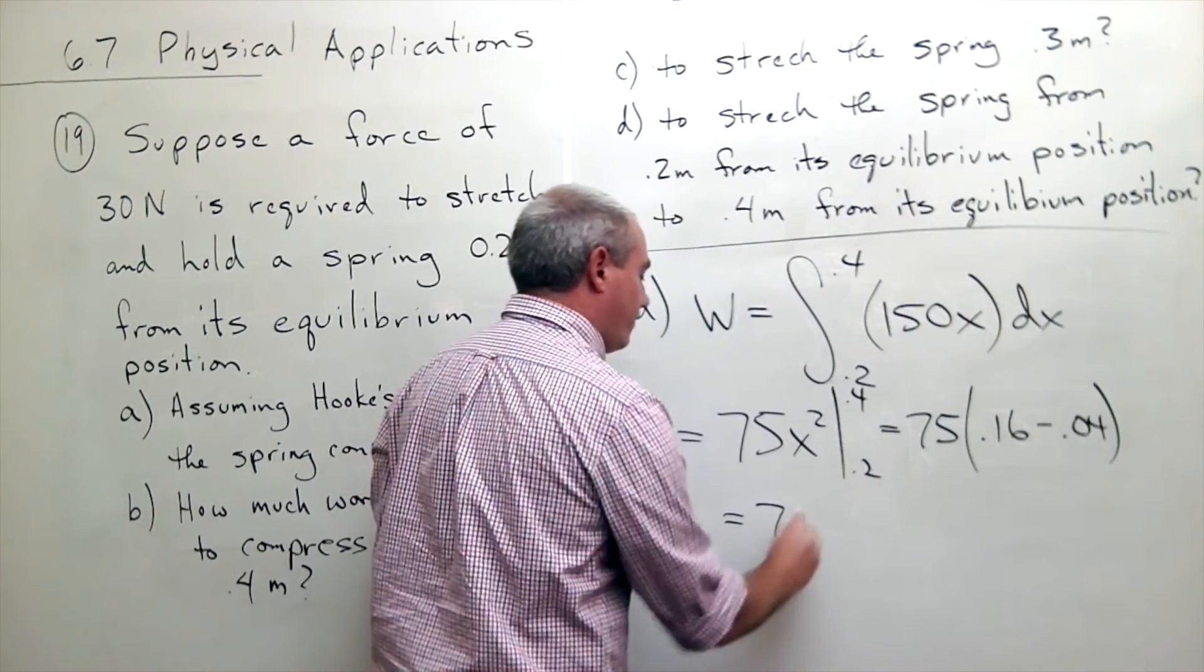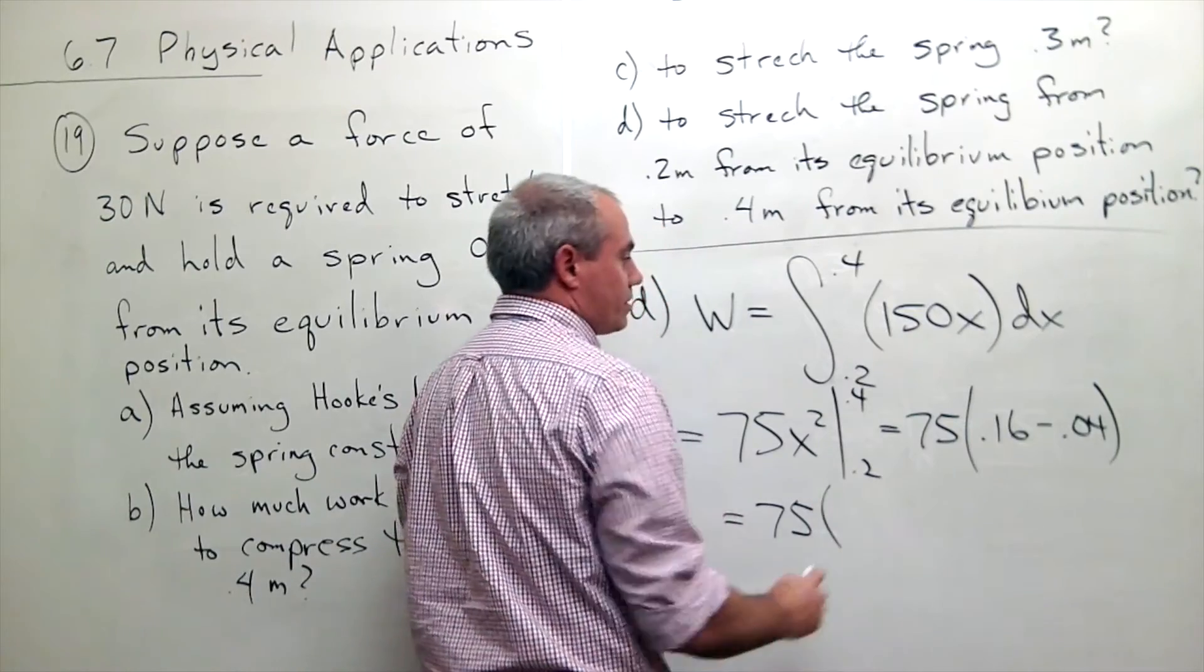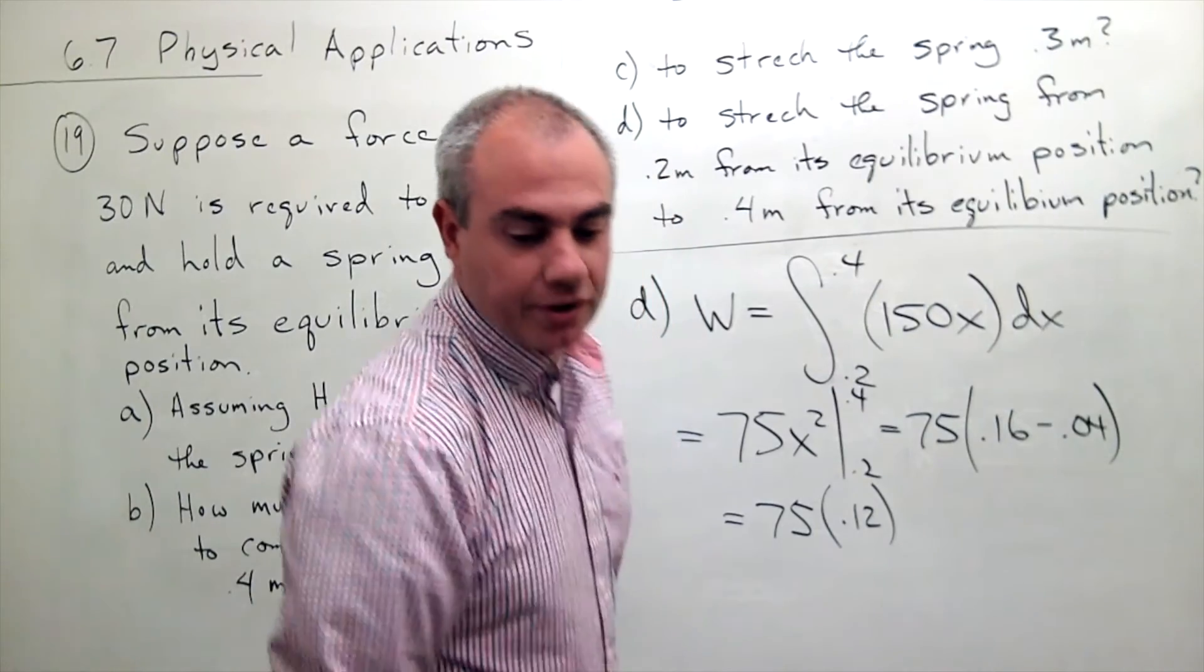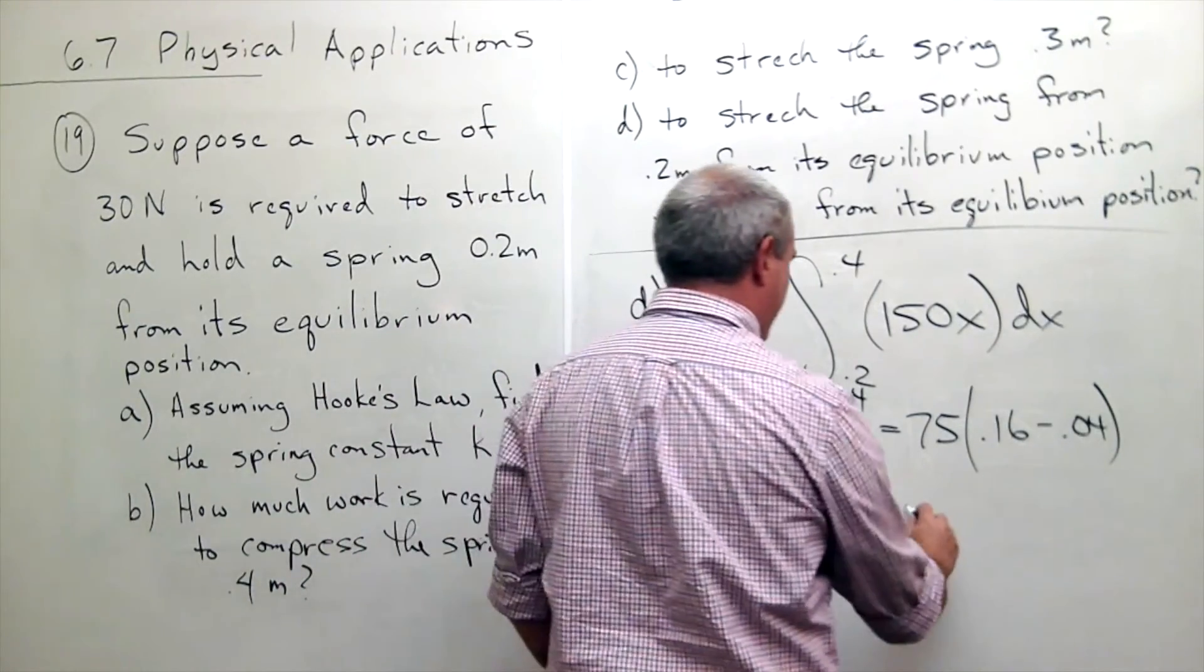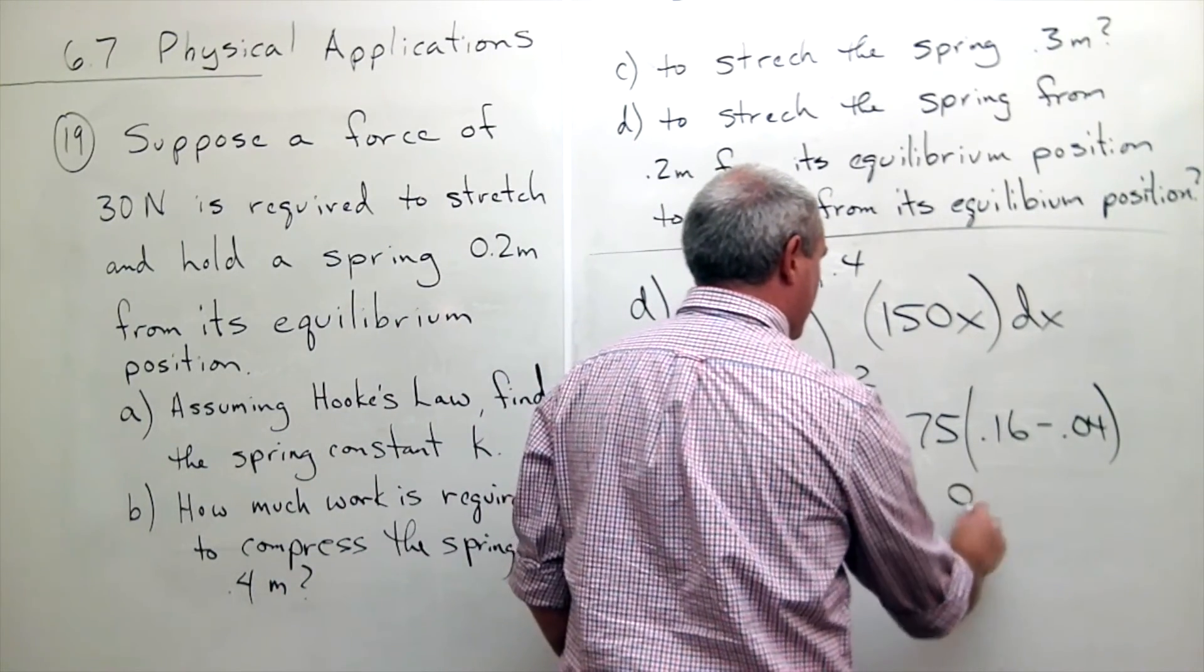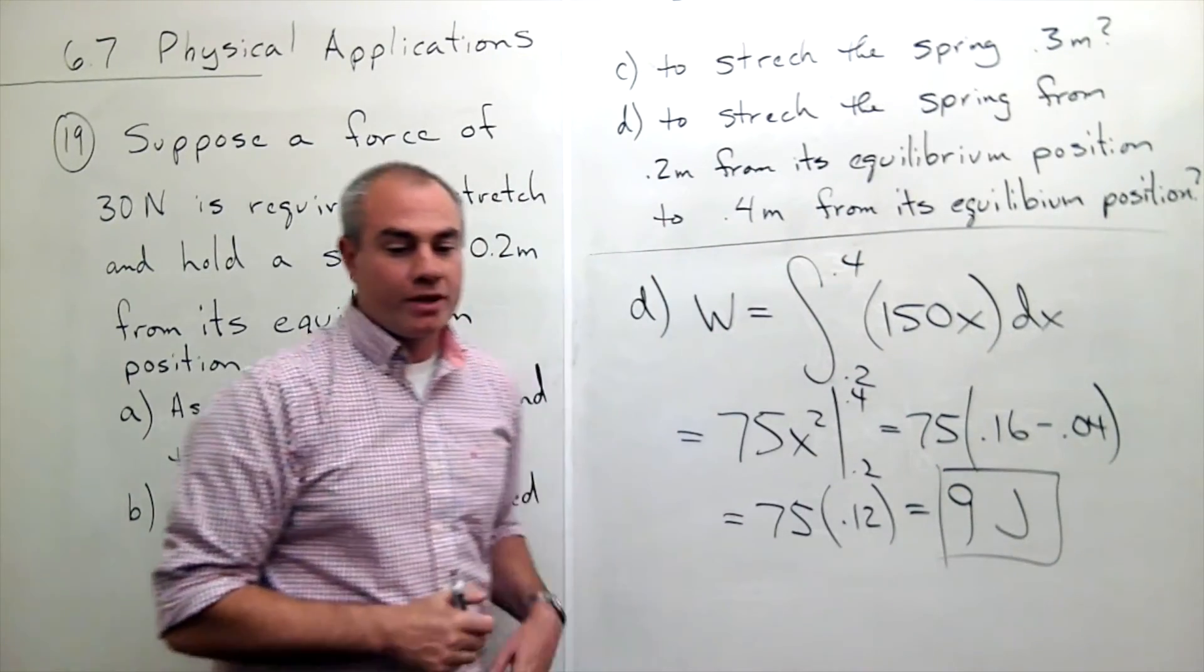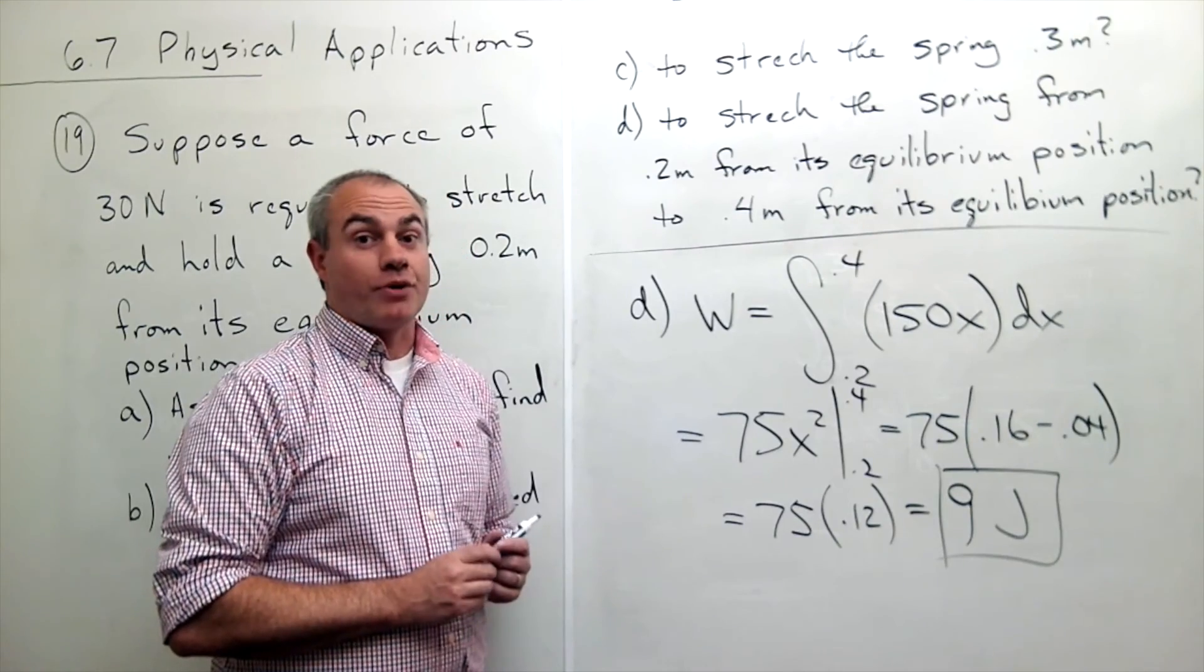So we get that 75 times 0.12, and if we actually do that on our little calculator that just gives us 9 joules. And we're done.